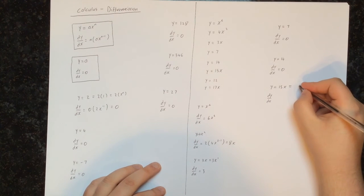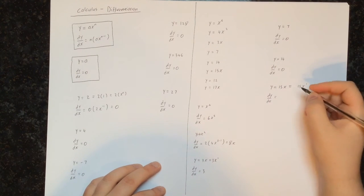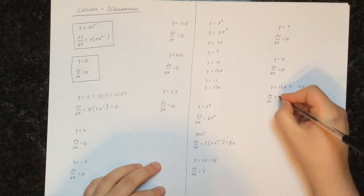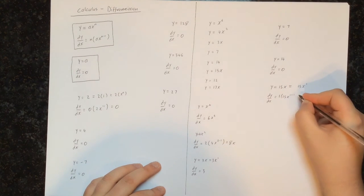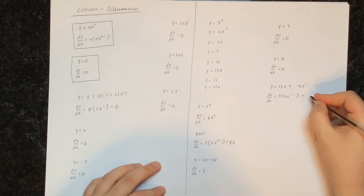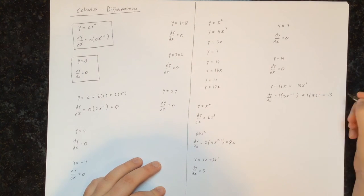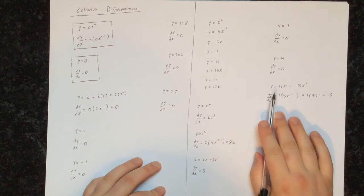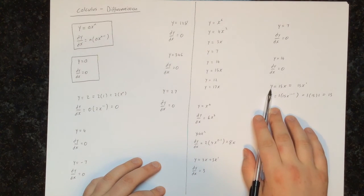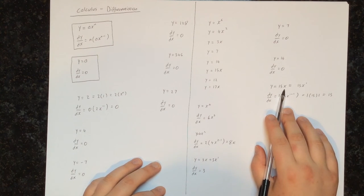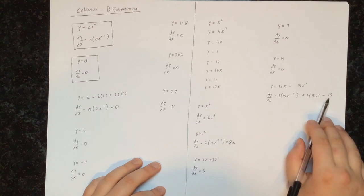So y equals 15x equals 15 times x to the power of 1. To differentiate that, we multiply by the power (which is 1) and reduce the power by 1. So we have 1 times 15 times x to the power of 0, which is 1, leaving us with 15. So whenever we have y equals some number times x — not x to a power, just x — then the derivative will just be equal to that number.